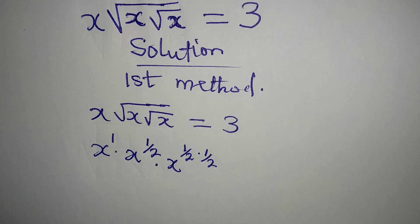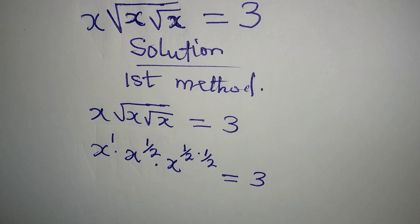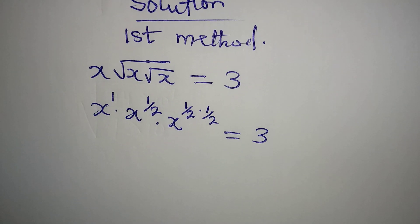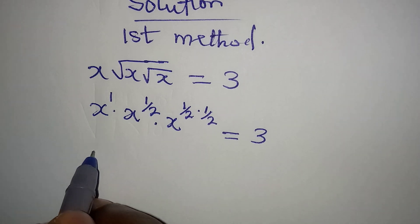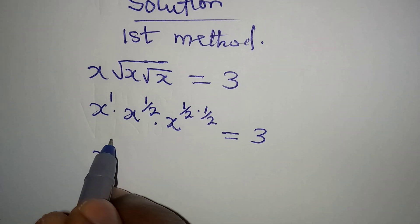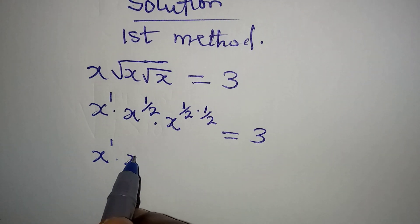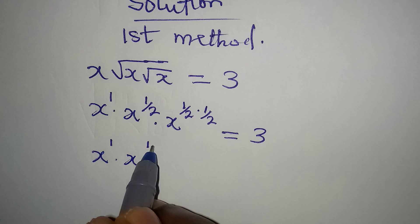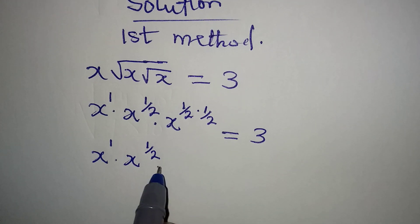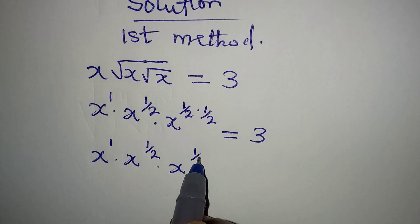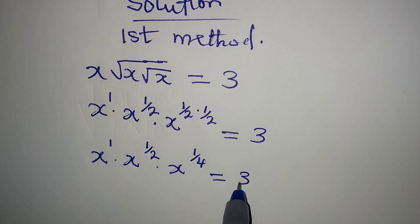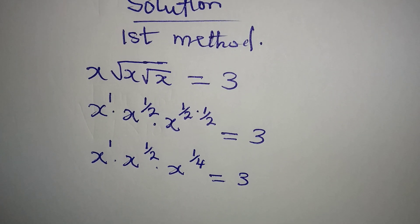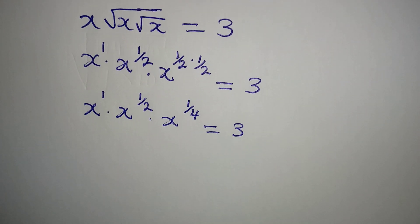Because x to the power of 1 over 2 is square root of x, and then we have 3 on the right hand side. From here we have x to the power of 1, multiplied by x to the power of 1 over 2, multiplied by x to the power of 1 over 4, and this is equal to 3.